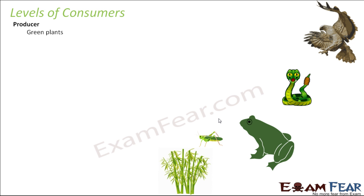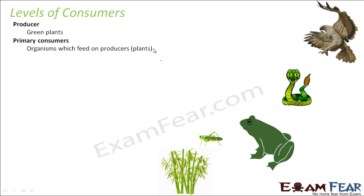In terrestrial ecosystems, green plants are the producers, and in aquatic ecosystems we have algae and phytoplanktons which also act as producers. The next level is primary consumers. These primary consumers are those which directly feed on green plants, so primary consumers are also known as herbivores.